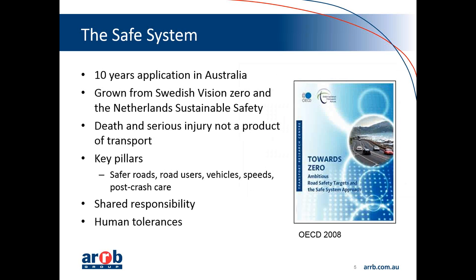The safe system approach — and I know there's been discussions in Canada around this — is the global approach for addressing road safety. We've had it and been applying it for the last 10 years in Australia. The approach has grown from the Swedish Vision Zero approach, but also the Dutch Sustainable Safety approach. There was a manual produced in 2008 by the OECD that's available on the internet which really lays out the basic thinking. That document has been updated, and later this year we should see a revised guide around the safe system approach.